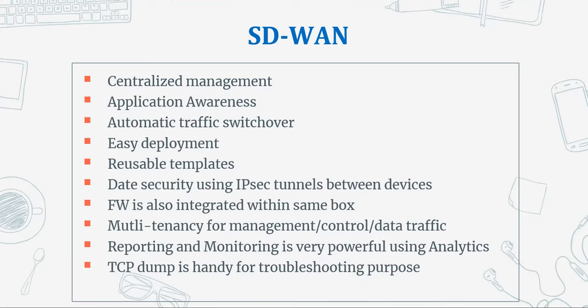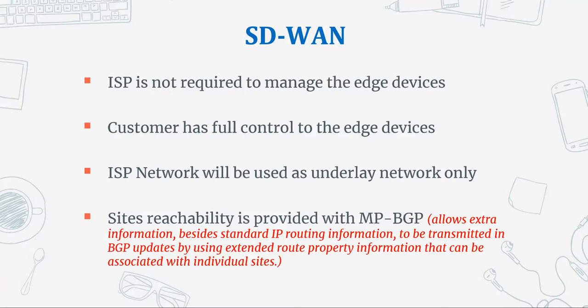Another benefit is that ISP involvement is no longer required to manage your edge devices — the customer has full access to the device. In legacy, we used to open tickets with ISPs even for small tasks like adding new routes. If the ISP device at the edge had static routes towards the LAN, you needed to open a ticket so they could add a route and advertise it. But now the customer has full control of the edge devices. The ISPs are there just for underlay connectivity.